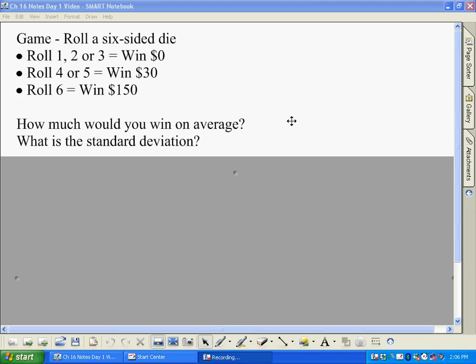So suppose we have a game set up here, and as it says on the screen that you're rolling a six-sided die. Well, the game works like this: if you get a 1, 2, or 3, you're going to win nothing, but if you get a 4 or 5, you're going to win $30, and if you get a 6, you're going to get the big jackpot of $150.